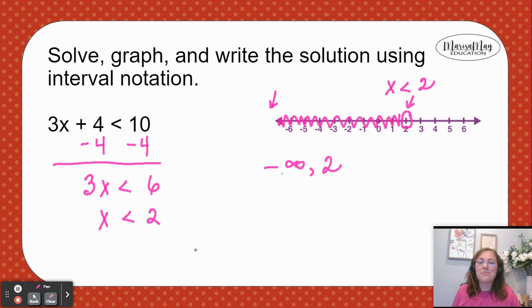Now we need some symbols. Parentheses are always used for infinities, whether positive or negative. And for an open circle, we always use a parentheses as well.